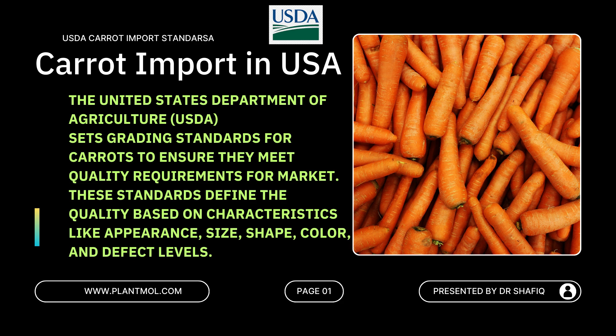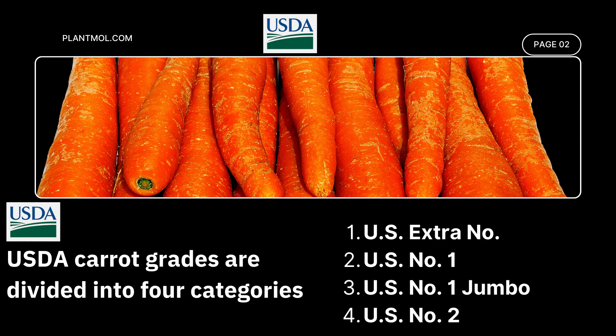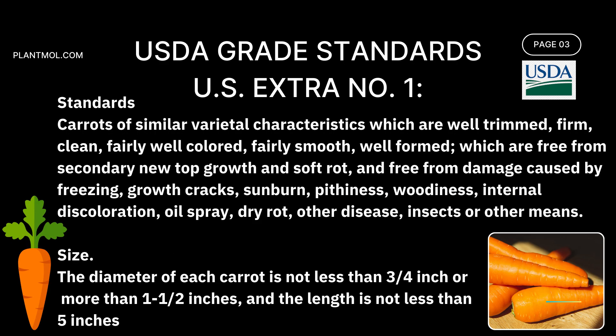There are four standards for carrot imports set by USDA based on size and other quality parameters. The first standard is called U.S. Extra Number One, which consists of carrots of similar varietal characteristics which are well-trimmed, firm, clean, fairly well-colored, fairly smooth, well-formed, which are free from secondary new top growth and soft rot, and free from damage caused by freezing, growth cracks, sunburn, pithiness, woodiness, and internal discoloration.